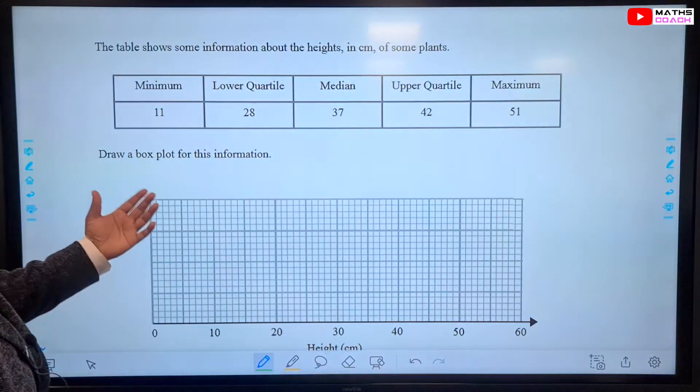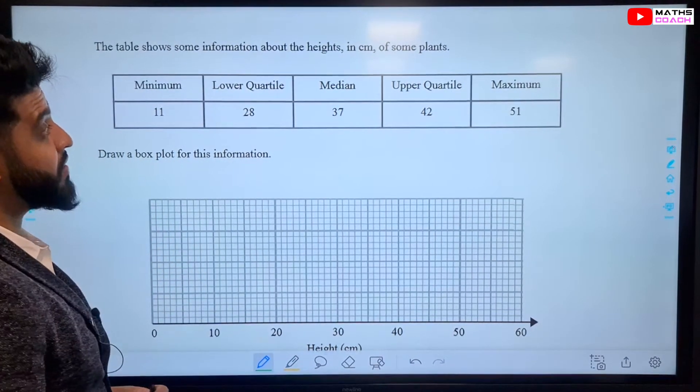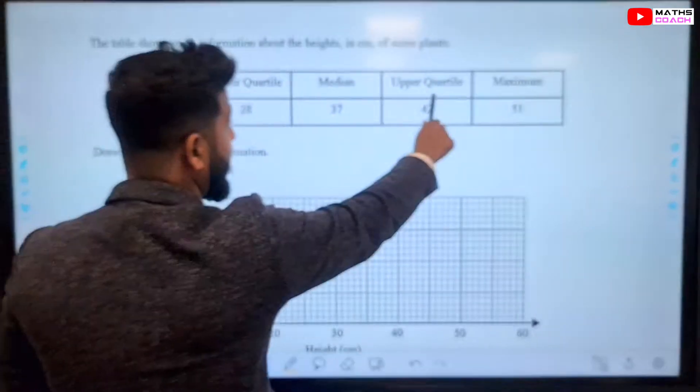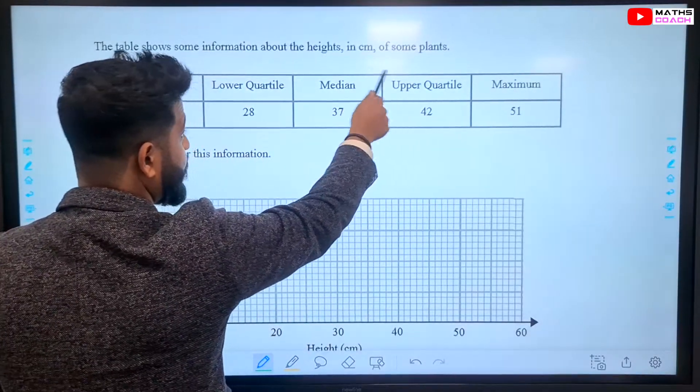This question says the table shows information about the heights in centimeters of some plants. We've been given this table here, listing our upper quartile, our median, our lower quartile,